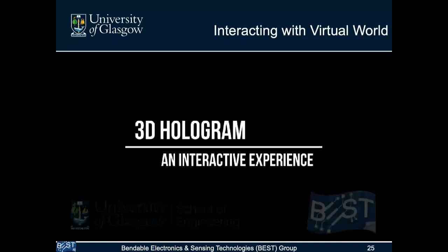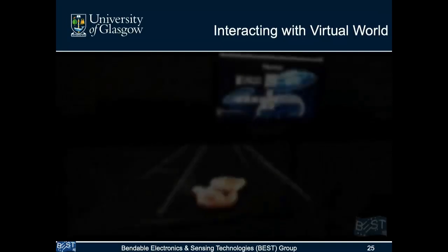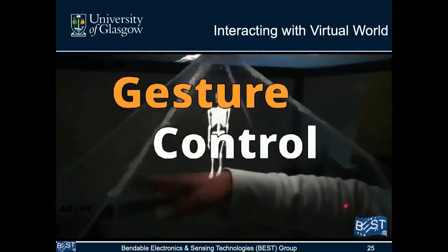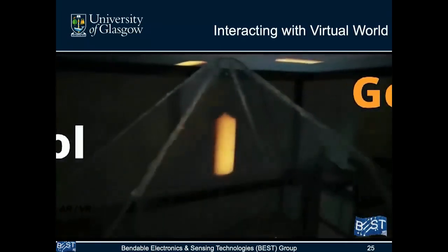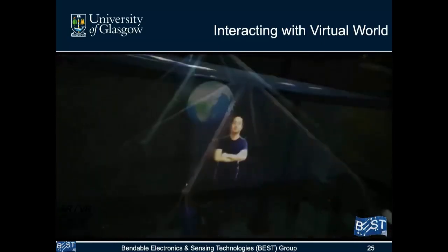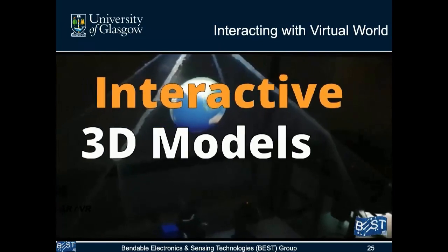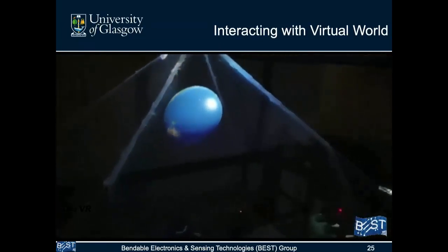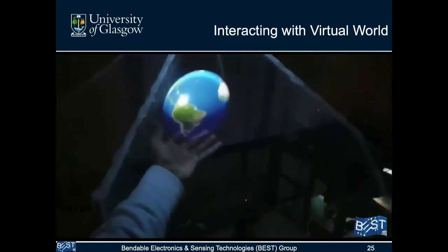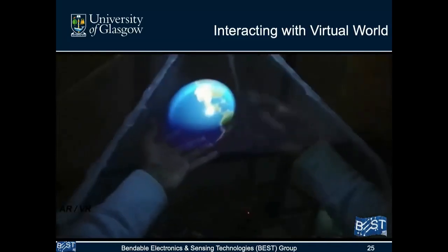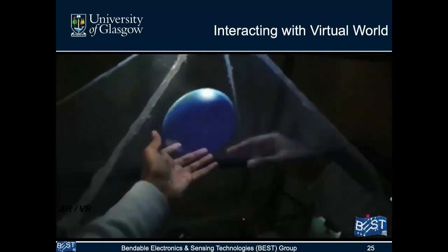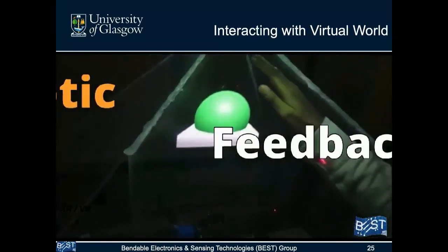Beyond robotics, the work extends to how 3D printed hands could interact with virtual objects. A first touch-interactive hologram was developed, where a virtual object such as a candle is created. The 3D printed touch-sensitive hand can interact with these virtual models, providing haptic feedback - you can sense the weight when lifting a virtual object, the heat when reaching toward the virtual flame, and a sense of pressure when pressing a virtual push button.